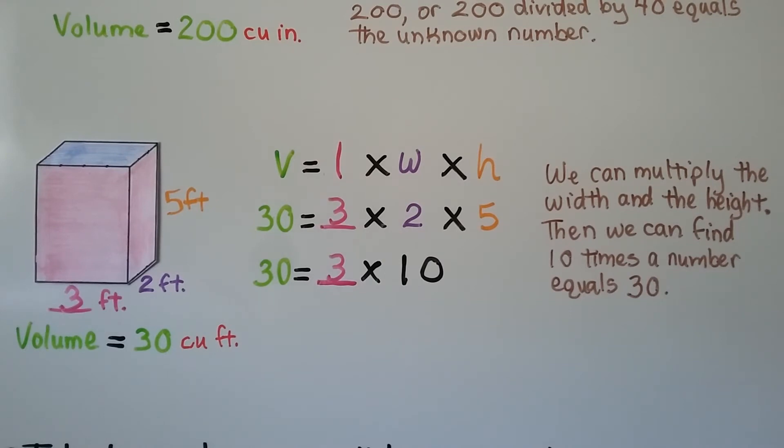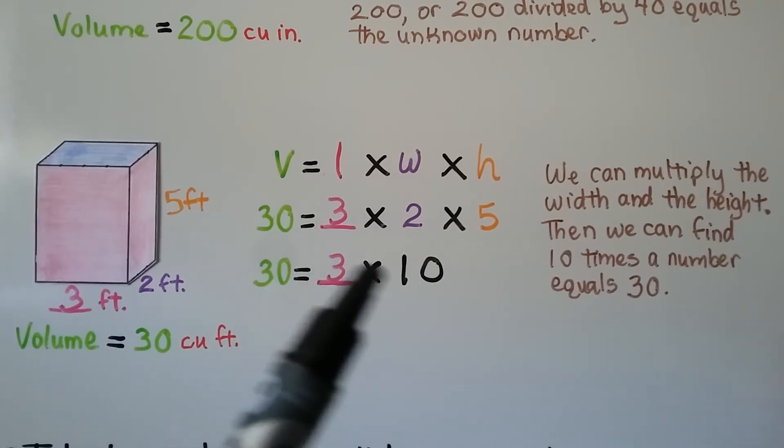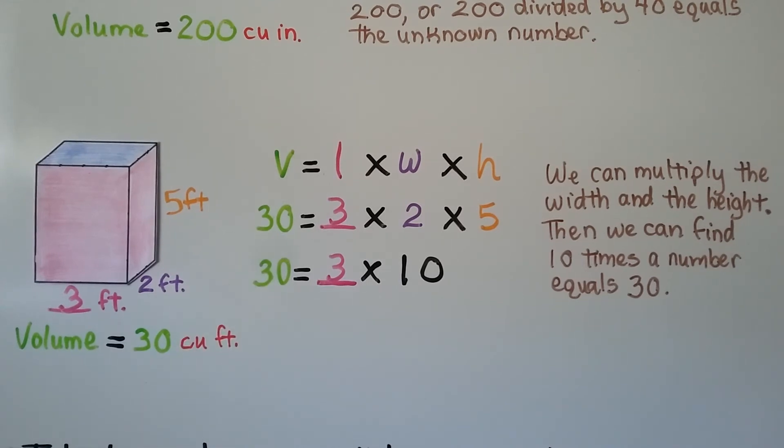We just multiply together the dimensions that we do have. And we can either use division or think of what the unknown number can be that will equal that product.